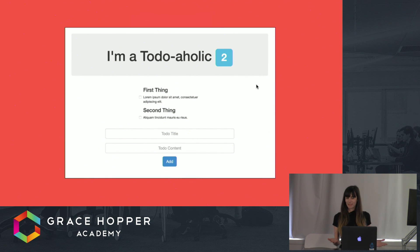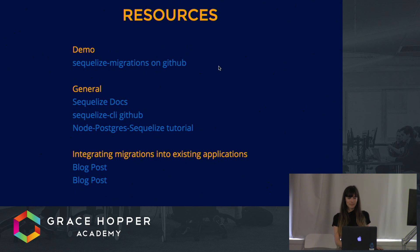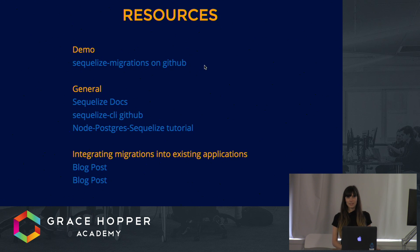Now here is your new app. Your to-do lists have titles, and your boss is very happy. Here are the resources I used. There's not too much documentation I could find on migrations, but I did make an actual repo showing how to use this with a to-do list, so you can have a look at it. I hope it was very helpful — thank you.